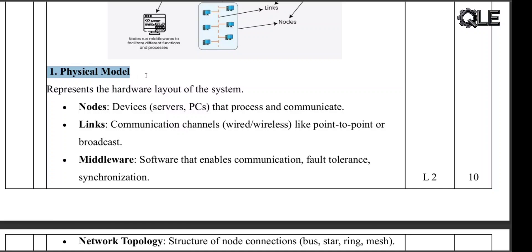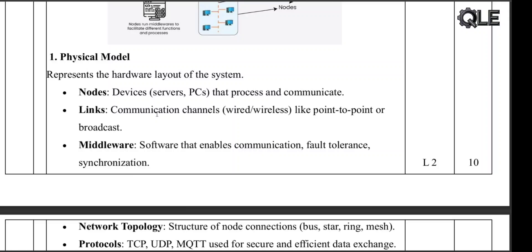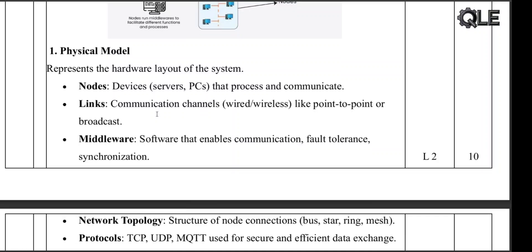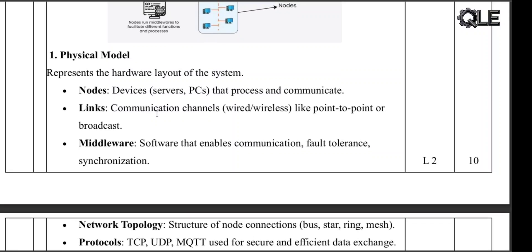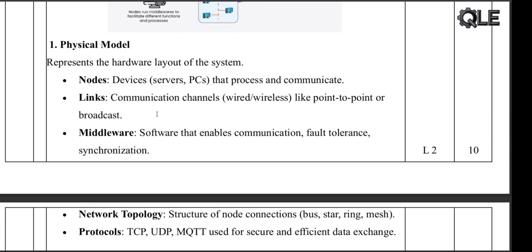The physical model shows the actual hardware and network layout of the system. Here's what it includes: nodes — these are the devices like servers or computers that do the processing and communication; and links — these are the connections like Wi-Fi or cables that let nodes talk to each other.